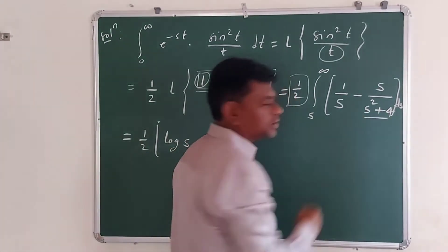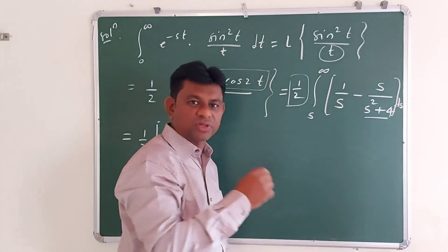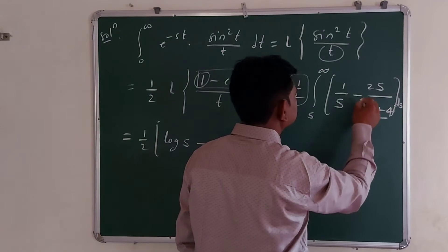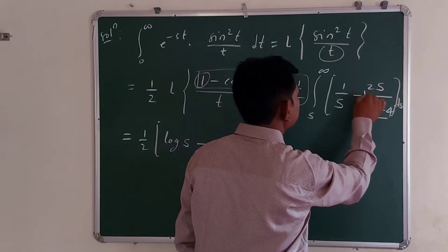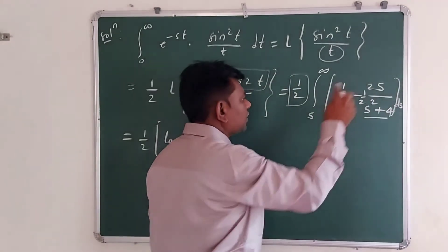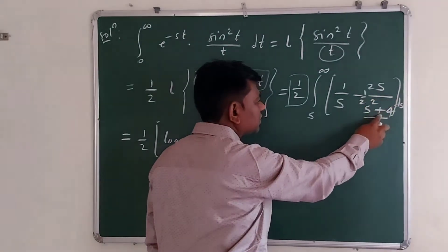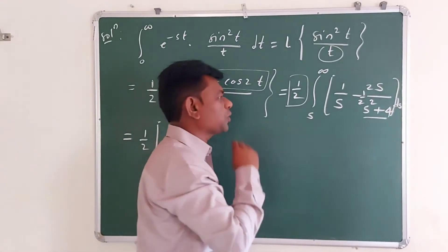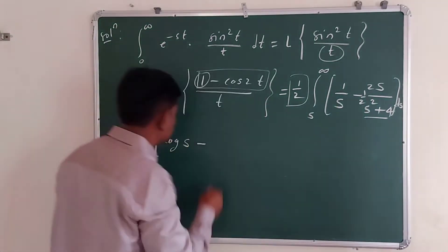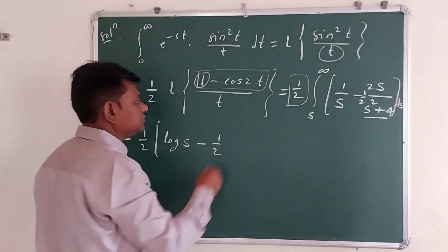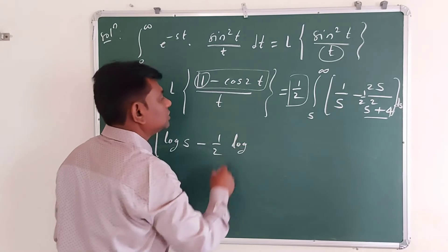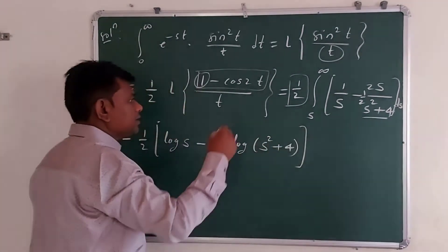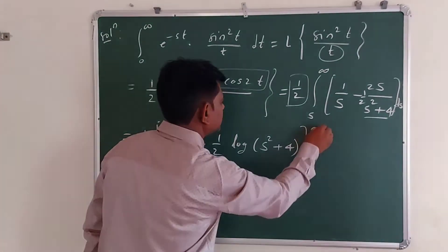The derivative of s squared plus 4 is 2s, so we adjust by a factor of 2. The integration of 2s over s squared plus 4 gives log of s squared plus 4. Therefore we get one half times log s squared plus 4, with limits from s to infinity.